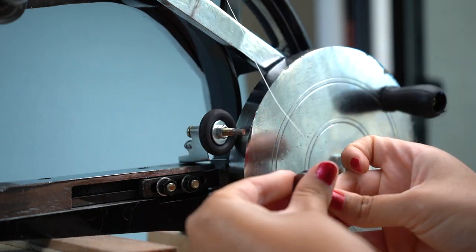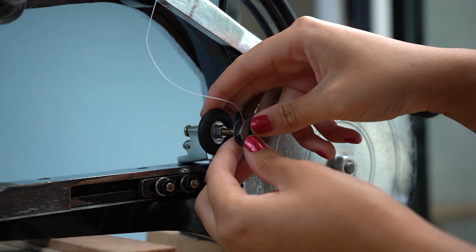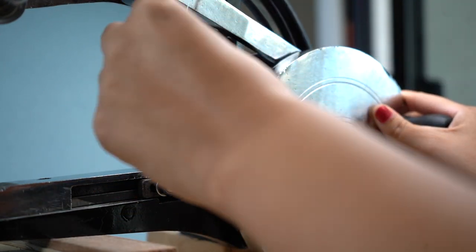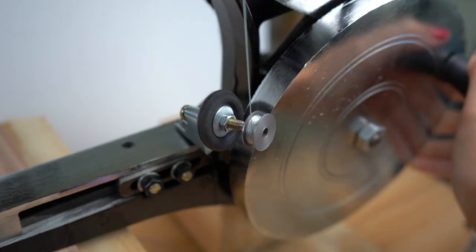So to thread our bobbin we're just going to get it started by wrapping some thread around it and then we're going to place it on the very convenient bobbin winder. Once you start spinning be sure to kind of hold the thread and guide it so it doesn't spill over or tangle and then from there you can kind of just let go and it'll wind right up.